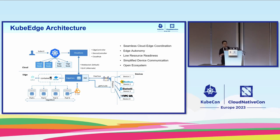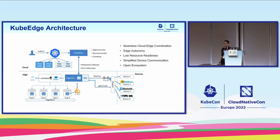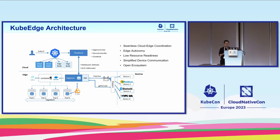The connection between the cloud core (the control plane) and the edge core (the node part) is actually a re-implemented list-watch mechanism over WebSocket. That enables the whole architecture to survive over a very bad quality network.